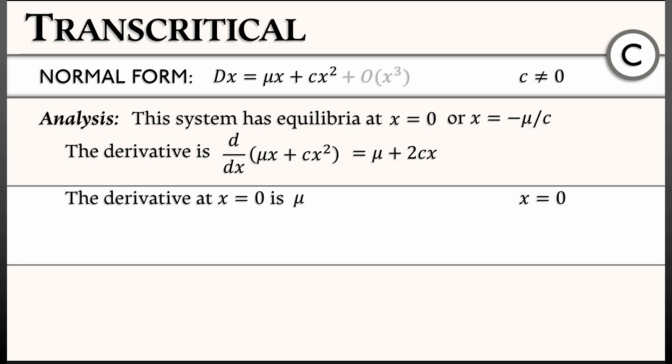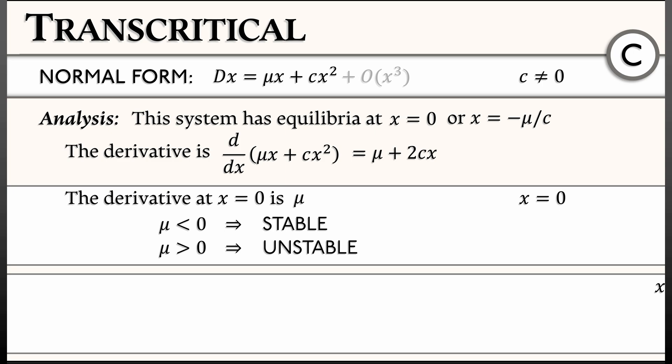That means, no matter what the value of c, when mu is negative, we have a stable equilibrium at zero. When mu is positive, we have an unstable equilibrium at zero. On the other hand, if I look at the other equilibrium at x equals minus mu over c, then the derivative of the right-hand side evaluates to negative mu.